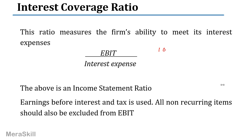Suppose we have $1 million as our EBIT and only $100,000 as our interest expense — that means the firm has 10 times the amount of interest it has to pay. This is very comfortable; the interest is fully covered. The firm can pay 10 times that interest and therefore seems to be financially secure.